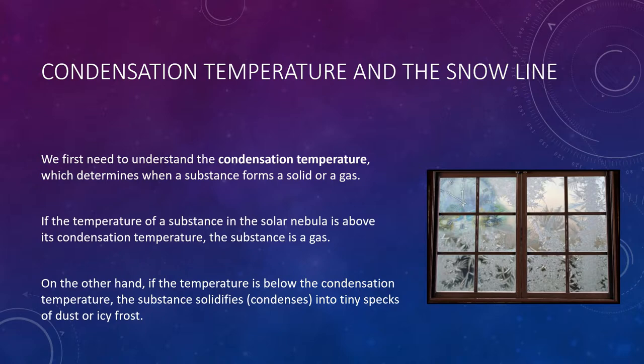We first need to understand condensation temperature, which determines when a substance forms a solid or a gas. If the temperature of a substance in the solar nebula is above its condensation temperature, then it is a gas—it isn't cool enough to condense. On the other hand, if the temperature is below the condensation temperature, the substance will condense or solidify into tiny specks of dust and icy frost.